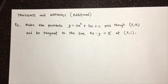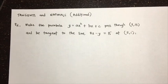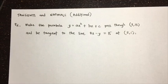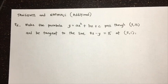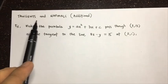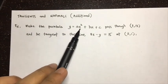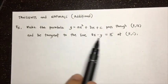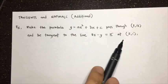This video is an additional problem for tangents and normals that was forgotten to be added in the previous video. The problem says to make the parabola y = ax² + bx + c pass through (3, 13) and be tangent to the line 8x - y = 15 at (2, 1).